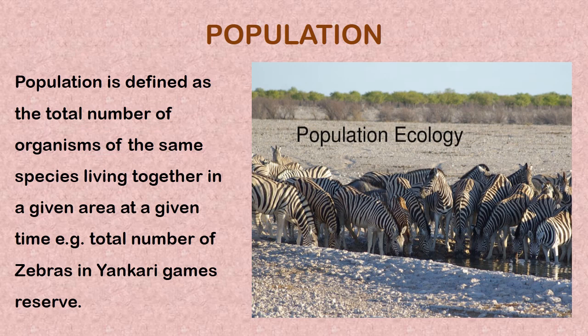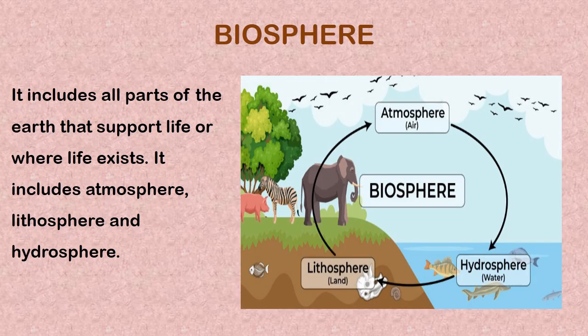Moving on to another concept — population. Population is defined as the total number of organisms of the same species living together in a given area at a given time. An example is the total number of zebras in a particular environment. So the population of the zebra refers to the total number of zebras found in a particular habitat — say, a game reserve — which constitute its population.